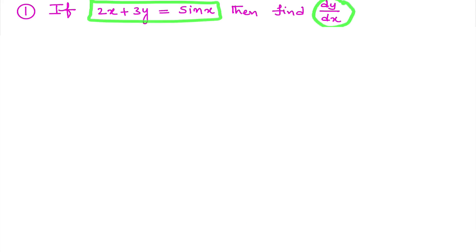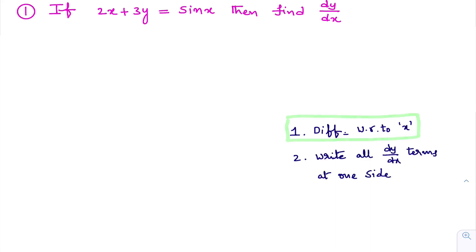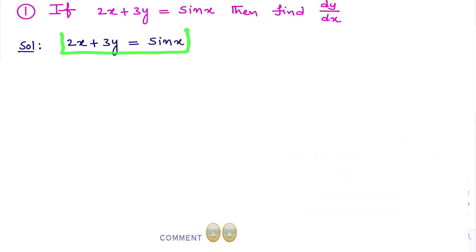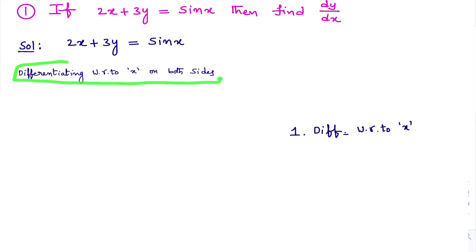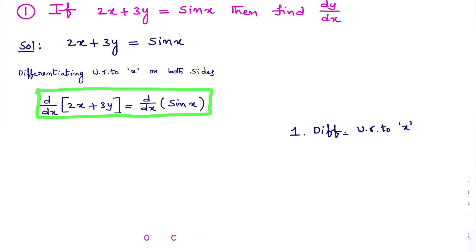How do we calculate dy/dx in an implicit function? To calculate dy/dx, we go through three steps. First, once you identify the given function as implicit, you differentiate it with respect to x on both sides. Differentiating with respect to x on both sides means you write d/dx to this equation on both sides: d/dx of (2x + 3y) = d/dx of sin x. We differentiate each term: d/dx of 2x + d/dx of 3y.